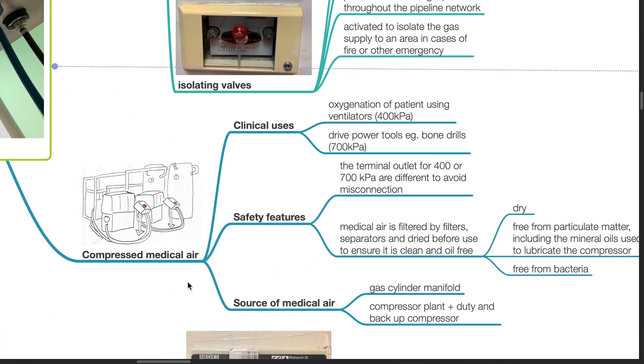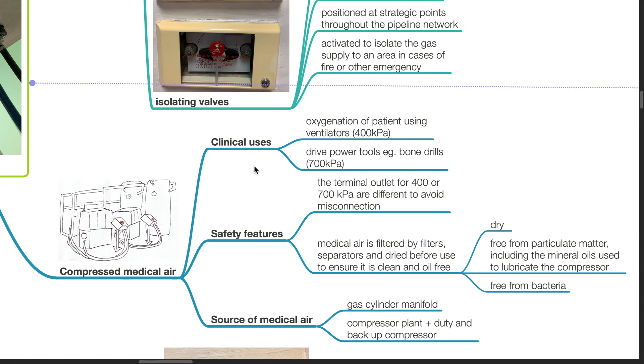Compressed medical air: Clinical uses include oxygenation of patients using ventilators at 4 bar or to drive power tools such as bone drills at 7 bar. Safety features include: the terminal outlet for 400 or 700 kPa are different to avoid misconnection.